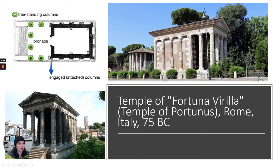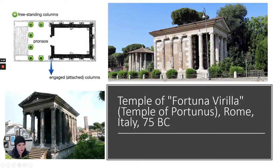The naos is closed off with engaged columns all the way around. The only area where you can walk up the stylobate and go in through open columns is on the pronaos or porch. There's only one entrance at the front of the temple — no opening in the back. There's also significantly less sculpture. We have a pediment, a cornice, and a frieze, which is open. It doesn't have triglyphs and metopes because this is Ionic order, and it's not quite as heavily adorned.